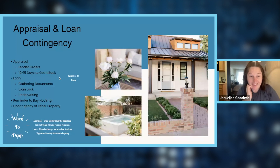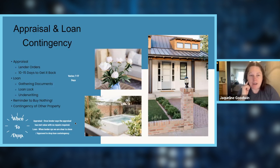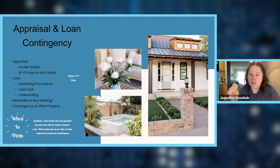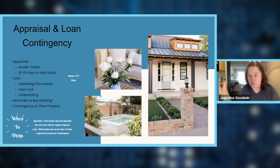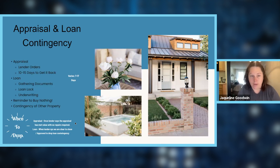Next are the appraisal and loan contingencies — reiterating that everything is happening simultaneously. It's not uncommon for several contingencies to fall on the same day. By default the contract says seventeen days for physical, appraisal, and loan — all three could be due the same day. For the appraisal contingency, the lender orders it, then the appraiser calls the listing agent to set up an appointment to visit the house. It can take about ten to fifteen days to get the report back — you can ask your lender for an ETA.